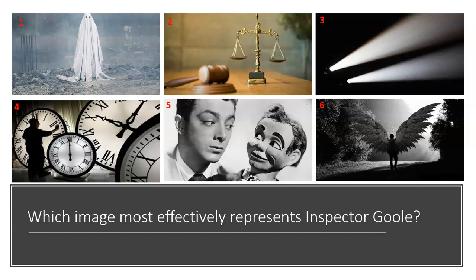The first thing I want you to do is have a look at these six different images and decide which image for you most effectively represents Inspector Goole. Is it the ghost? Is it the judge and the scales of justice? The spotlight beaming onto the Birlings? Is it somebody who's very obsessed with time? Maybe a ventriloquist's puppet — that would be Priestley, who's using Inspector Goole as a mouthpiece? Or is he an angel — an angel of vengeance? Pause now, decide which one you think he is, and write down why.